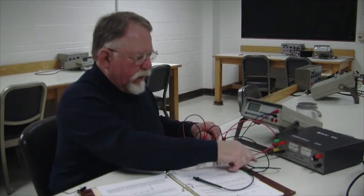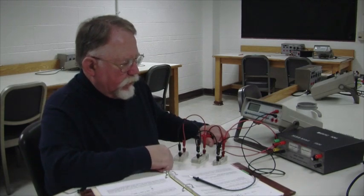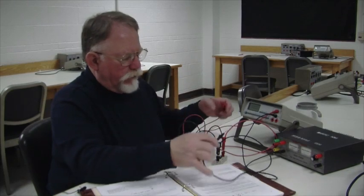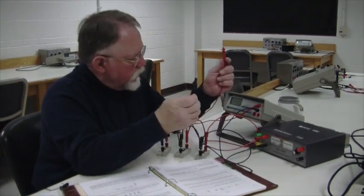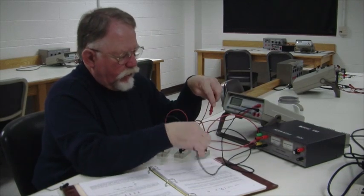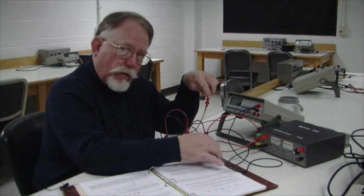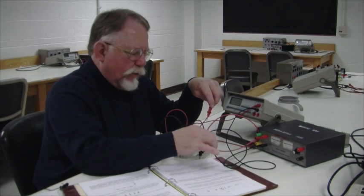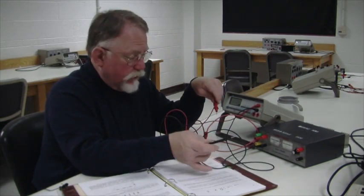Now, in order to measure current in the circuit, current is completely different. Voltage is always a difference between two points. So you hold the probes in two hands. And in order to measure the voltage, which is I times R for each of these resistors, we don't want to take any of the current away from the resistor.